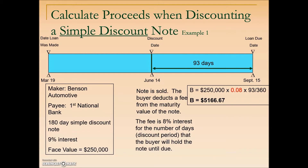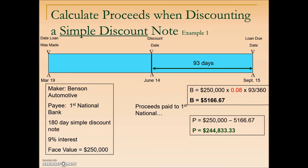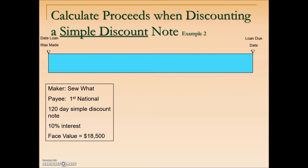The holder of this note, First National Bank, will then receive the proceeds from this transaction, which is found by taking the maturity value minus the bank discount fee, giving us proceeds of $244,833.33.